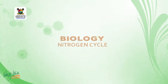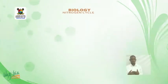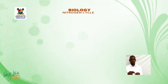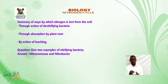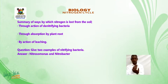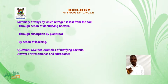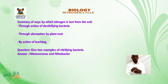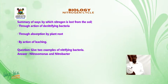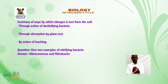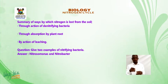Summary of ways by which nitrogen is lost from the soil: through the action of denitrifying bacteria, through absorption by plant roots, and by the action of leaching.